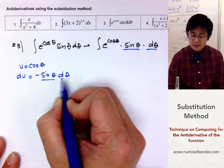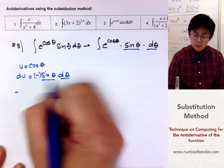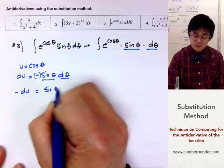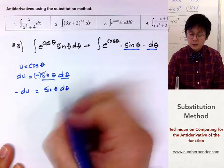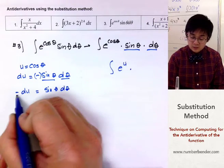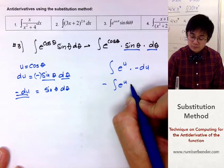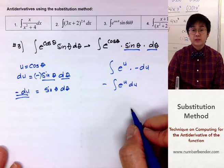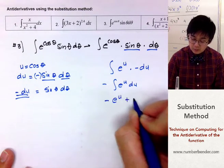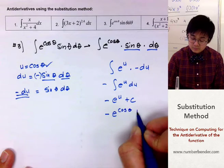From the modified function I have sine theta and d theta, but the negative is in the derivative. Multiplying both sides by negative 1, I get negative du equals sine theta d theta — now they look identical. So the new integral is the integral of e to the u times negative du, or negative e to the u du. The antiderivative of e to the u is e to the u, so the answer is negative e to the cosine theta plus c.